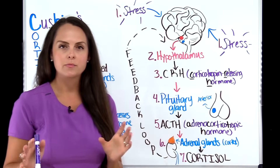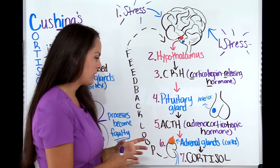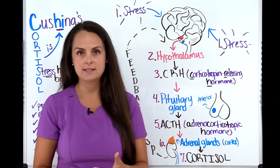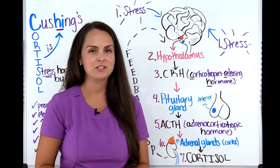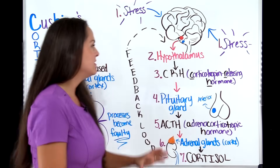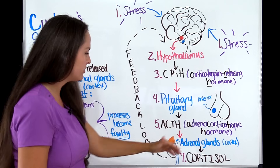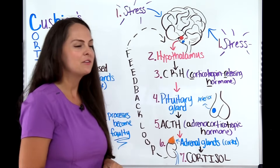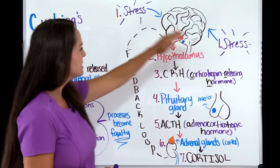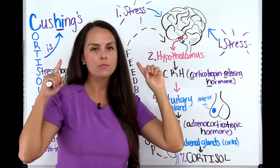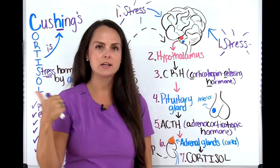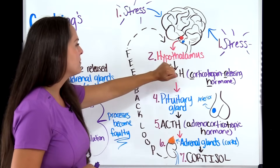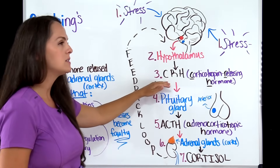Now let's talk about how cortisol is produced, because understanding this will help you understand the difference between Cushing's syndrome and Cushing's disease, and why certain lab work is ordered. It all starts with the hypothalamus, pituitary gland, and adrenal glands and a feedback loop installed in the body. The first step is that a person experiences some type of stress, the brain picks this up, and says we need to get our stress hormone cortisol made, so it goes through these processes.